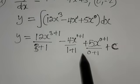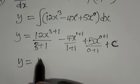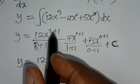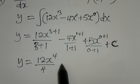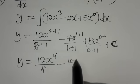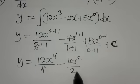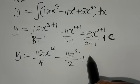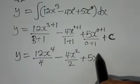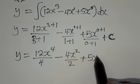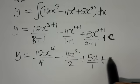Now we just need to simplify. We have y equal to 12x to the power 4 over 4, minus 4x to the power 2 over 2, plus 5x to the power 1 over 1, plus C. Anything raised to the power 1 is just itself, so we have 5x over 1.